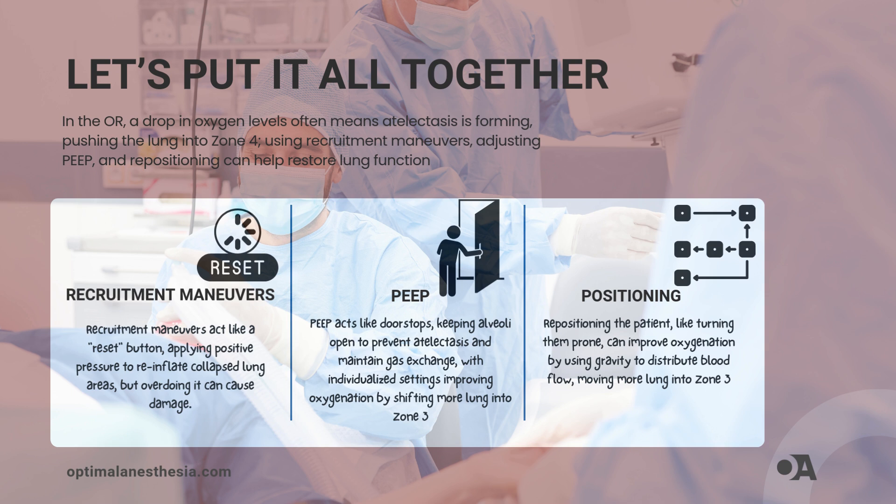Number two: PEEP — your best friend in keeping doors open. Positive end-expiratory pressure acts like doorstops throughout the building, keeping those doors — alveoli — from slamming shut every time you exhale. This helps prevent atelectasis and maintains gas exchange efficiency. Studies show that individualized PEEP settings can shift more of the lung into Zone 3, leading to better oxygenation.